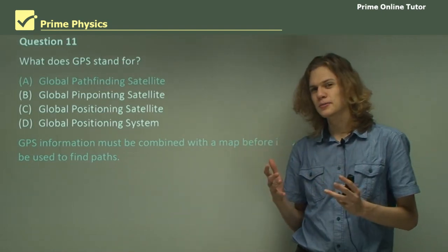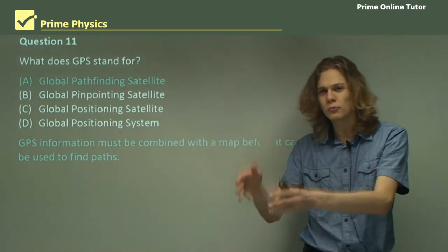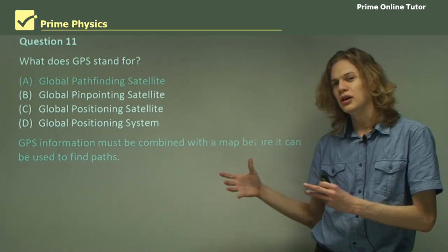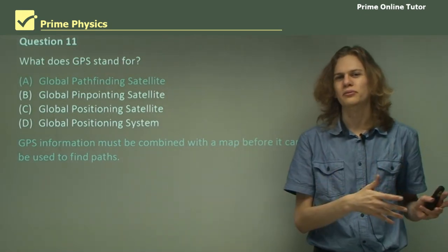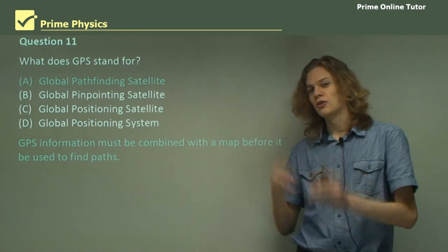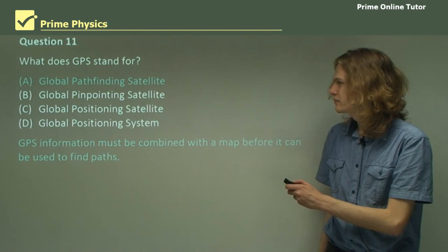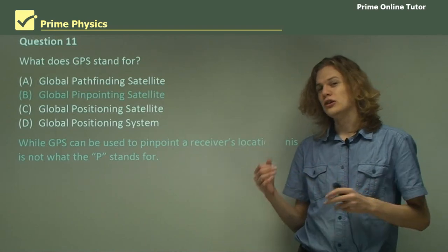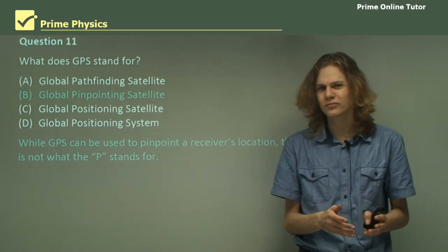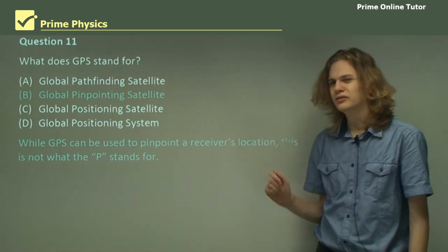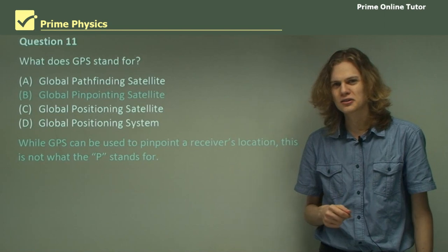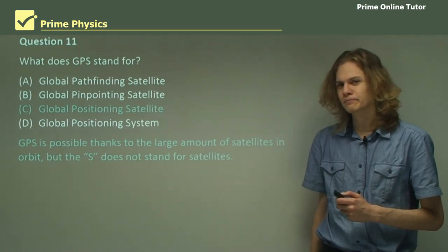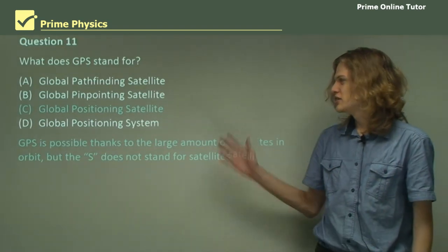We know that we can use GPS to figure out the route from one place to another place, but GPS won't do that on its own. We need to combine the GPS data with a computer that has a map of where we are. The GPS simply tells us our location on that map. B says Global Pinpointing Satellite. This seems a bit closer because we can use trilateration to pinpoint our exact location on the Earth, but pinpointing isn't really a particularly scientific way of saying things, so I think we'll let it go for the moment. How about C, Global Positioning Satellite? This is the closest one yet. Positioning seems like a pretty scientific word.